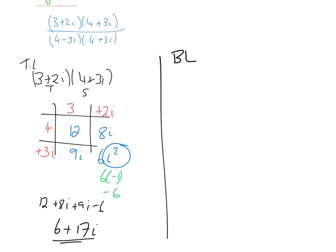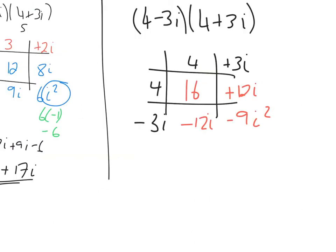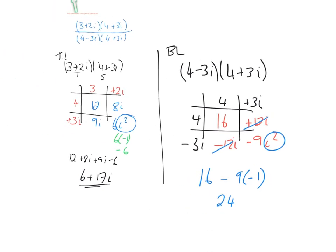The bottom line is four minus three i times four plus three i. Using box multiplication again, you'll notice there's a plus 12i and a minus 12i which immediately cancel. So we have 16 minus 9 times minus one, which is 16 plus 9, giving 25.